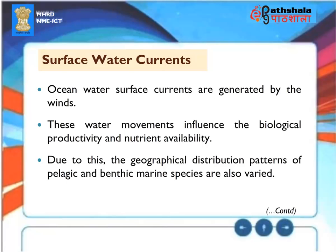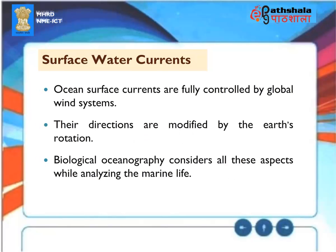Surface Water Currents: Ocean surface currents are generated by the winds. These water movements influence the biological productivity and nutrient availability, and due to this, the geographical distribution patterns of pelagic and benthic marine species are also varied. Ocean surface currents are fully controlled by global wind systems, and their directions are modified by the Earth's rotation. Biological oceanography considers all these aspects while analyzing the marine life.